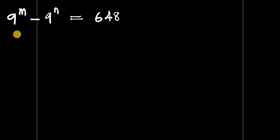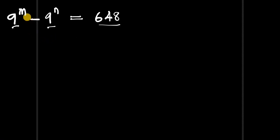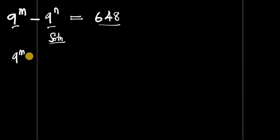Hello, in this video we are going to solve this interesting exponential equation. We have 9 to the power of m minus 9 to the power of n equals 648, and we are going to find the values of m and n that satisfy this equation. So let's start — we can recall the problem: 9 to the power of m minus 9 to the power of n equals 648.